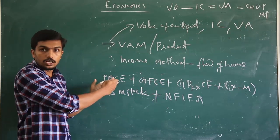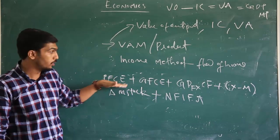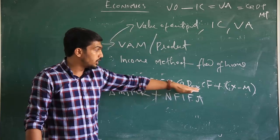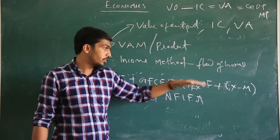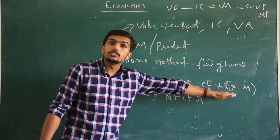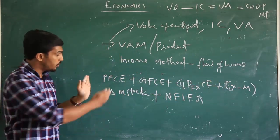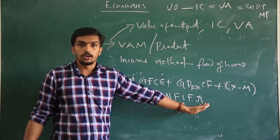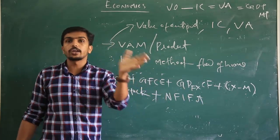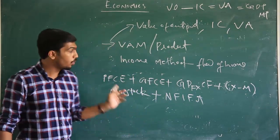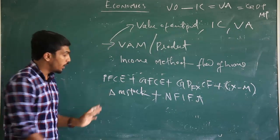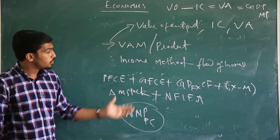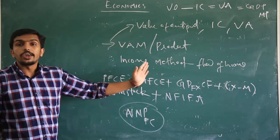To summarize the expenditure method components: Private Final Consumption Expenditure is the consumption expenditure of households and firms; Government Final Consumption Expenditure is the expenditure of the government side; Gross Capital Formation is the total investment expenditure of government, household, and firms; X minus M is the net export value; change in stock is the difference between opening and closing stock; and net factor income from abroad is the external income source. When we add these variables together, we can get the Net National Product at factor cost, which is exactly equal to national income.